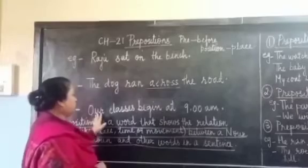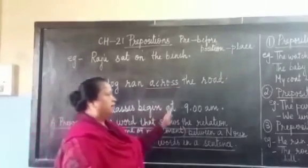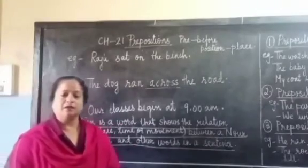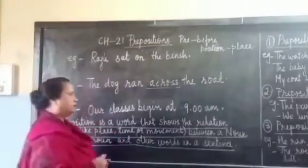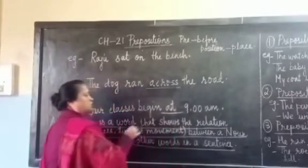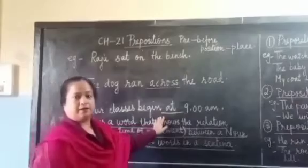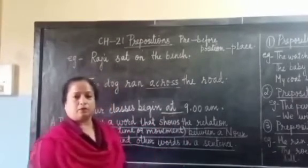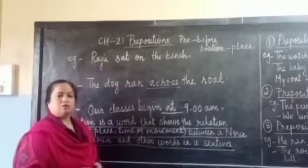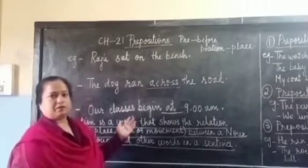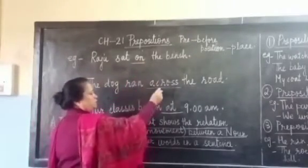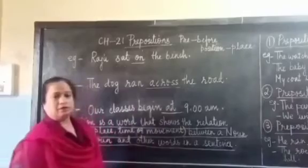The next sentence is: Our classes begin at 9am. Here we are talking about our classes — when do they begin? They begin at 9am. So the word 'at' is the preposition that tells us about the time that our classes will begin. So the different prepositions we read about are 'on', 'across', and 'at'.